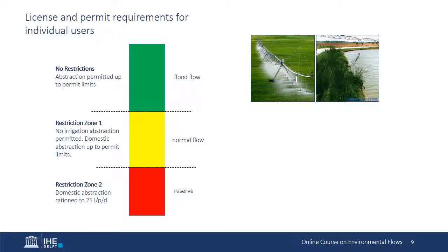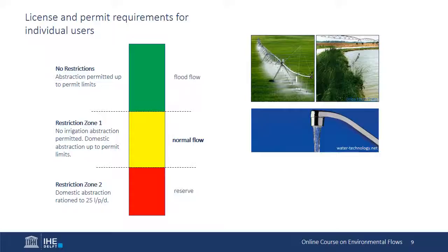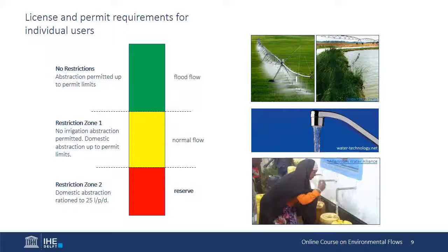During flood flow conditions, there are no restrictions and all permit holders can extract water up to the limits of their permits. When flows drop below the flood level and into restriction zone one, irrigators must stop abstracting and shift to use of water stored on their farm, which should be sufficient to meet irrigation needs for 90 days. In restriction zone one, permit holders for domestic water uses may still abstract water up to the level of their permit. However, when flow levels drop below the instantaneous flow level set for the reserve, domestic water abstractors must also curtail their uses to a level equivalent to 25 liters per person served per day. This condition will prevail until flows again increase to levels above the reserve. This system requires real-time monitoring of flow levels and communication with permit holders to advise them of the level of restriction in place.